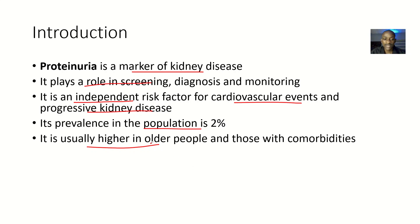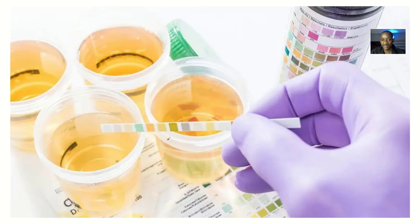Proteinuria is usually higher in older people and those with comorbidities — meaning people who have other disease conditions or multiple disease conditions. So it is usually more common in people characterized by these factors. This is proteinuria: the presence of protein in urine.